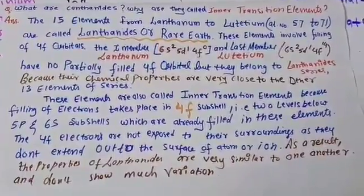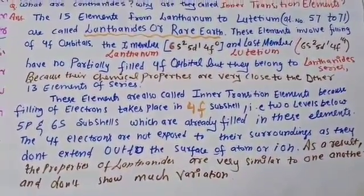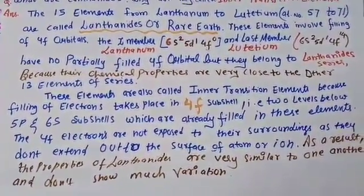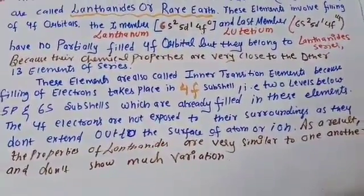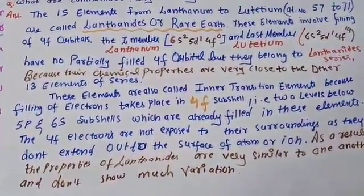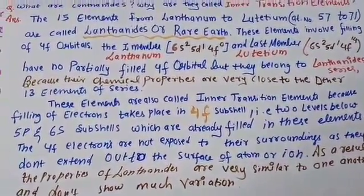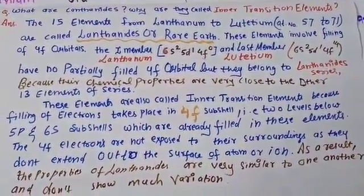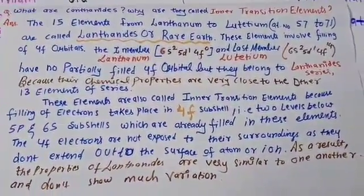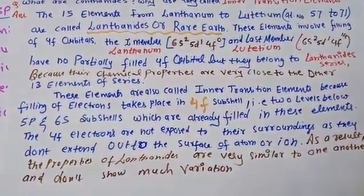Sometimes they ask: what are the lanthanides and why are they called inner transition elements? The 15 elements from lanthanum to lutetium are called lanthanides or rare earth elements, and the first electron starts filling in the series from cerium. There will be questions from electronic configuration which I will cover in the next video. I hope this video is easily understandable. If you have any doubts you can ask me by email or text me personally. Thanks for watching — the next video will be uploaded soon. If you haven't subscribed to my channel, do subscribe and share with your classmates and friends.